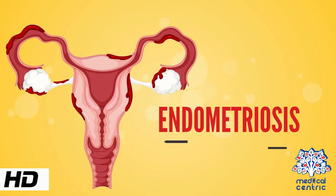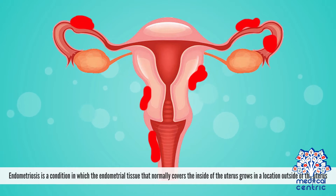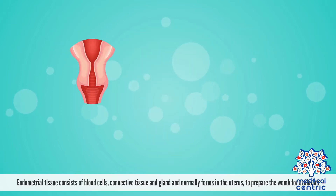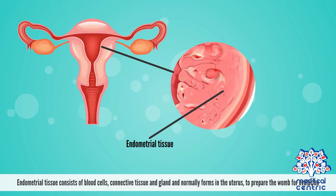Today's topic is endometriosis. Endometriosis is a condition in which the endometrial tissue that normally covers the inside of the uterus grows in a location outside of the uterus. Endometrial tissue consists of blood cells, connective tissue, and glands, and normally forms in the uterus to prepare the womb for ovulation.